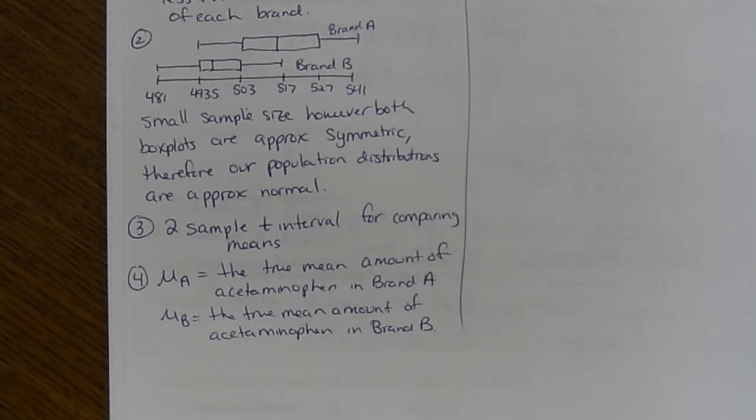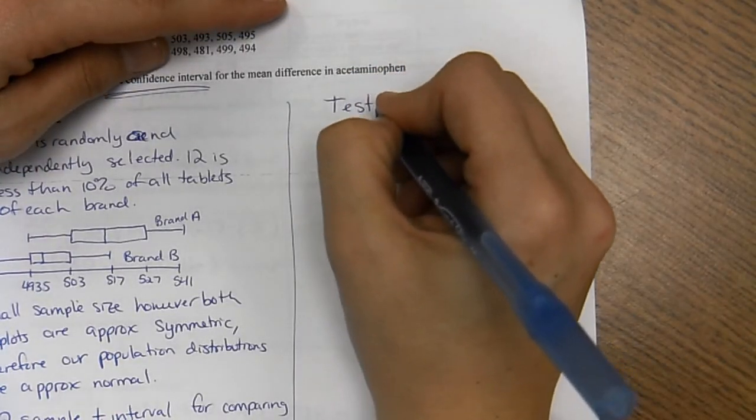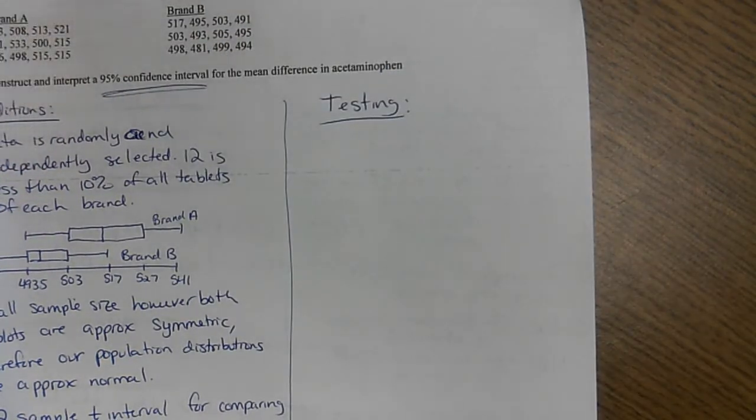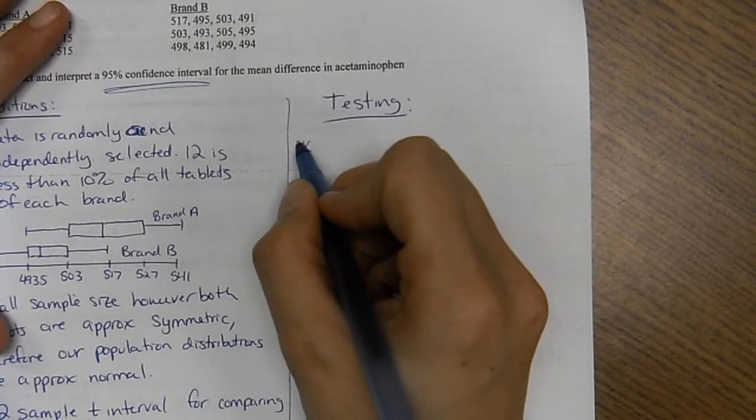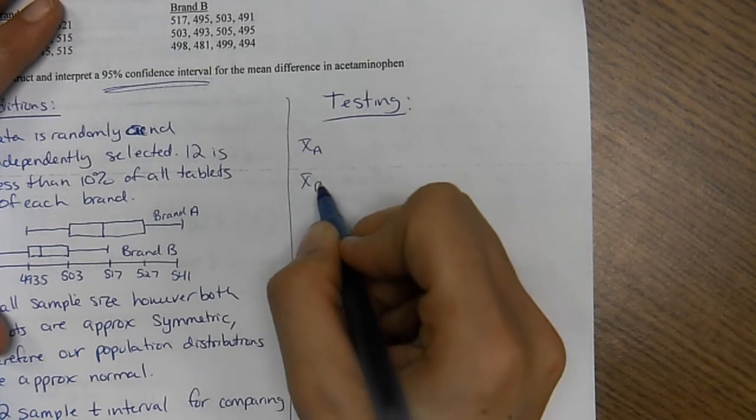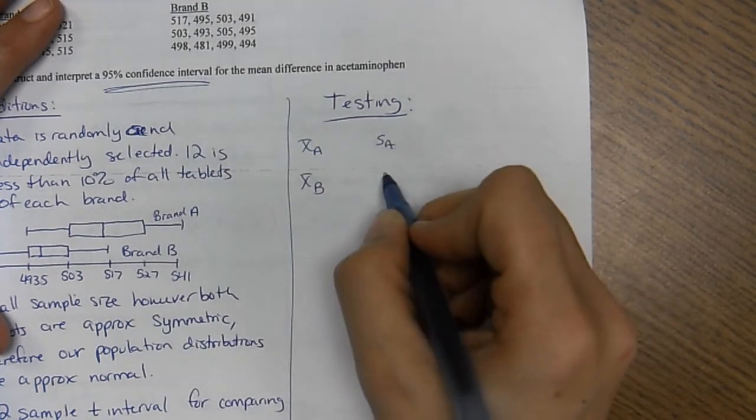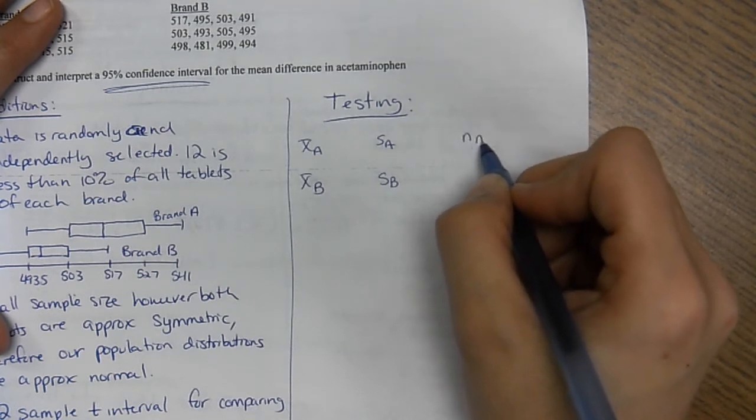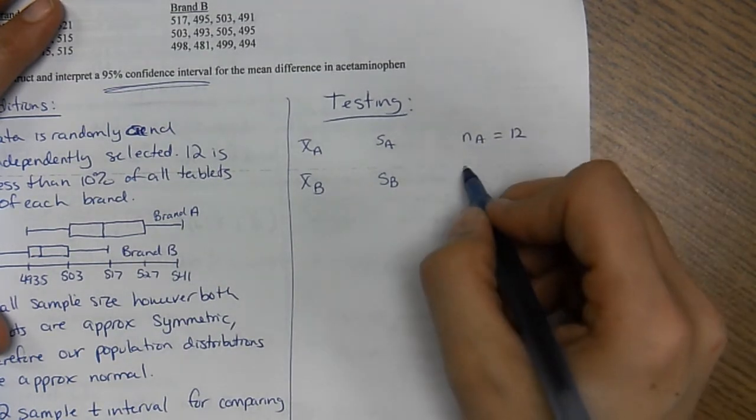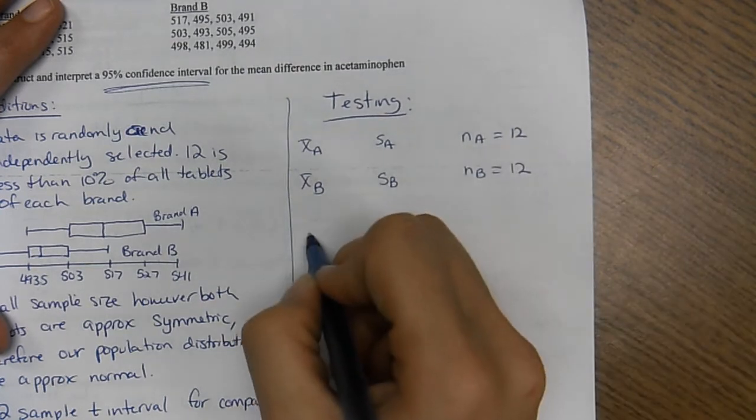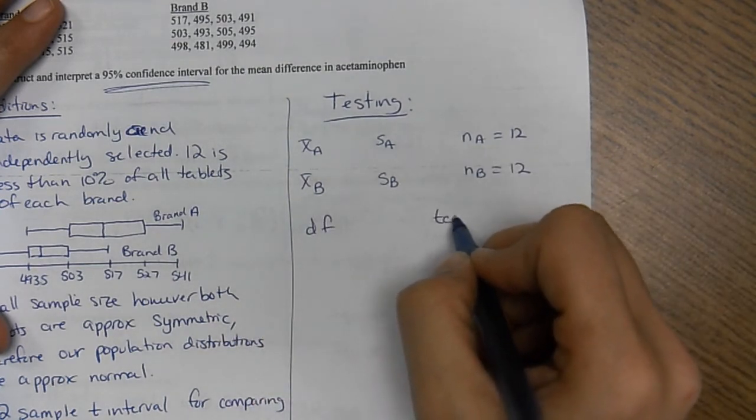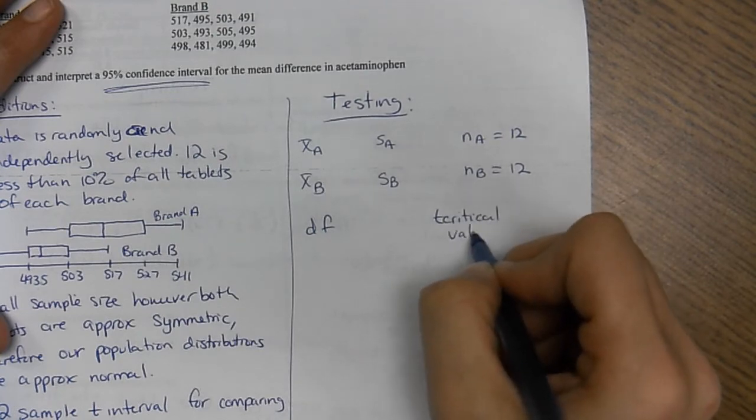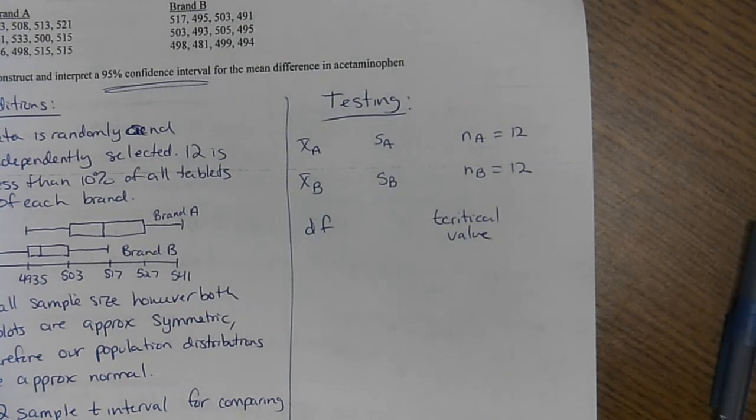Except we don't know any of our stats. So we can't really do the formula. So we're going to work backwards. So for the testing section, you're going to need to list X bar for brand A, X bar for brand B, S for brand A, S for brand B. We know sample size for A is 12 and N for B is 12. We don't know our degrees of freedom or our t critical value. So we know nothing. But the calculator will give it to us once we do our interval.